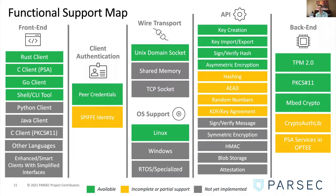The API exposed to the application layer is based on modular blocks that can be created for the language that suits your application. Currently, PARSEC has front-end interfaces in Rust, Go, and C, and also supports a very practical command-line interface that has proven useful to set up and test the service. The number of back-end modules is also growing. Today it includes interfaces for TPM 2.0, PKCS11, MbedCrypto, CryptoAuthLib, and the team is working through an implementation that will align with PSA services in Mbed TLS.